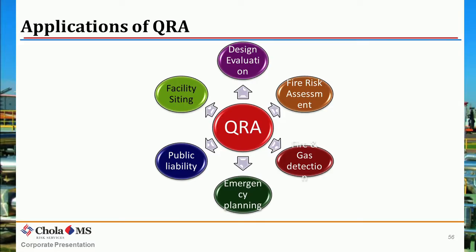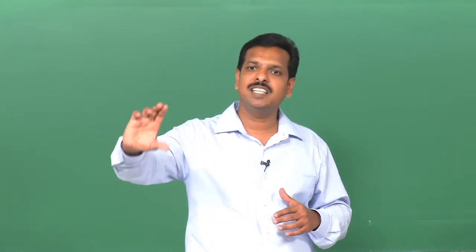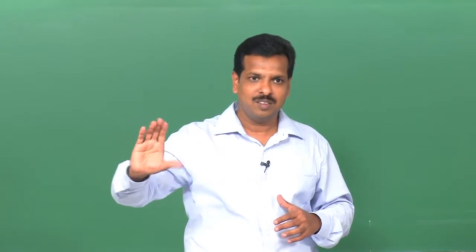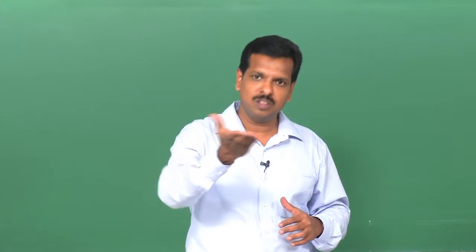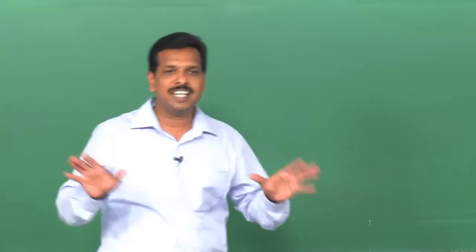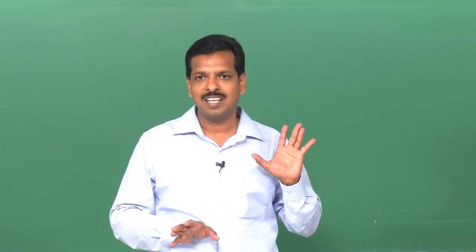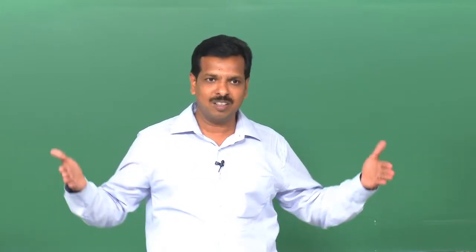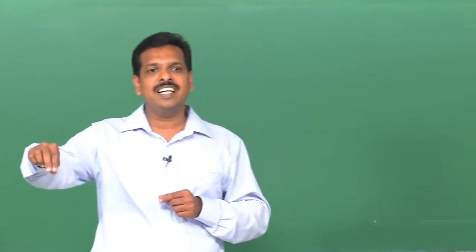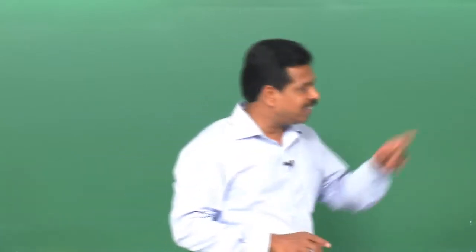Third is fire and gas detection mapping — another output of the study where we provide dispersion values showing how far a particular concentration will be reached. Based on that, we position leak detectors (gas detection systems). There are many detection techniques: semiconductor, catalytic combustion, electrochemical. All these detectors must detect a leak and give an alarm or command isolation valves or emergency systems. We provide the values indicating where detectors should be positioned — location and height.